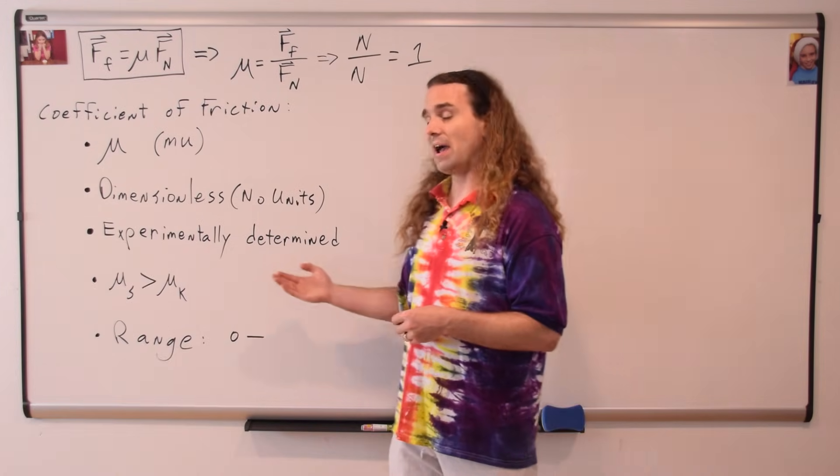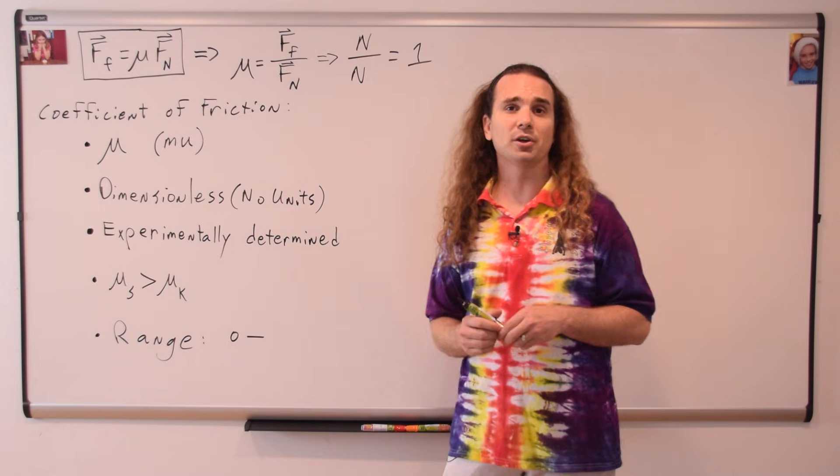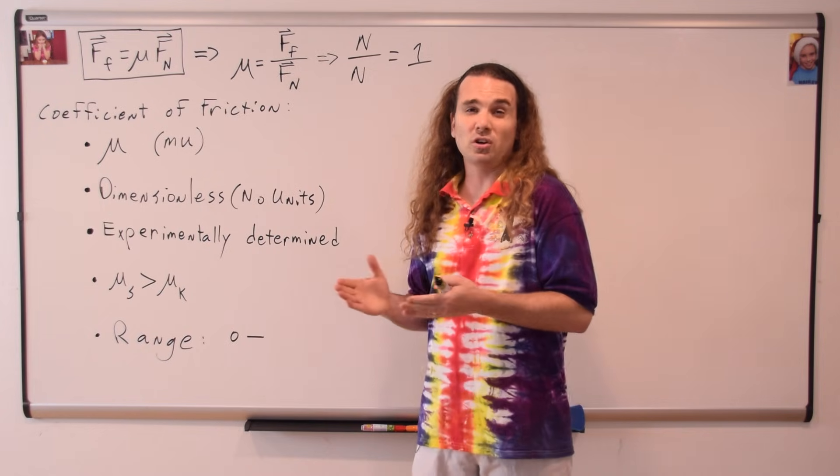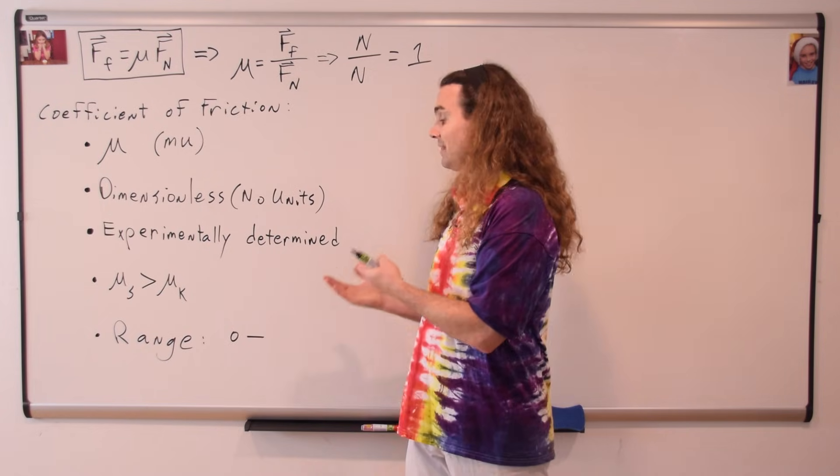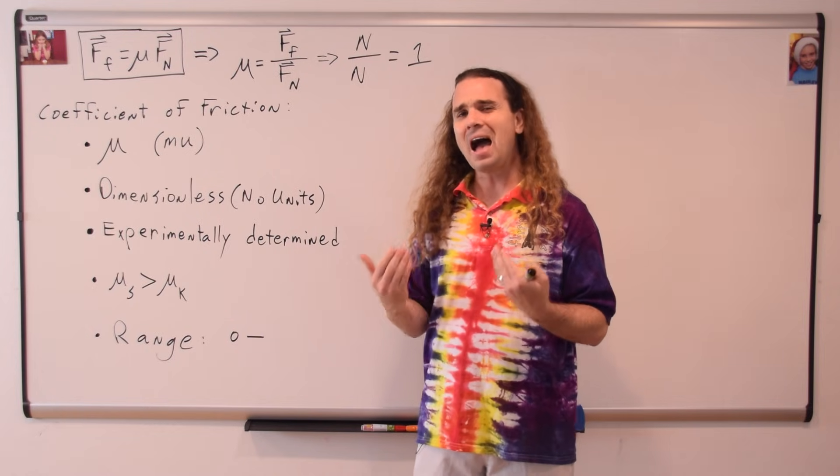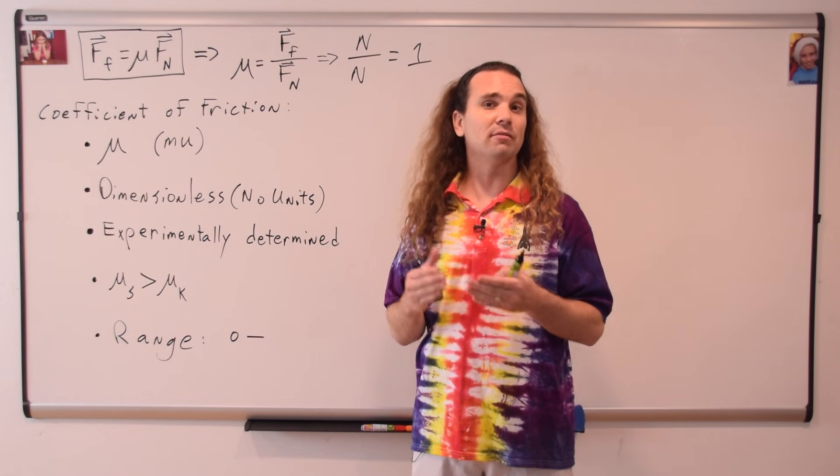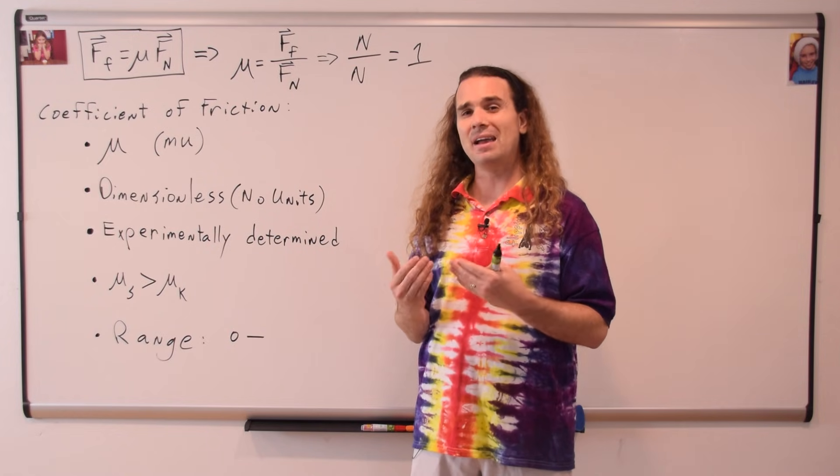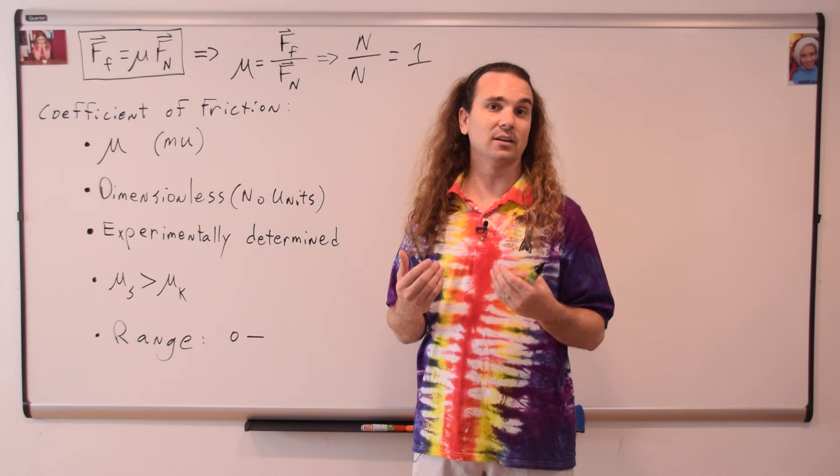That would give us zero as a lowest possible number for the coefficient of friction. In other words, the coefficient of friction could never be less than zero. As far as an upper range, the highest published value I have seen is a value of four, and that was for drag racing tires on dry concrete.